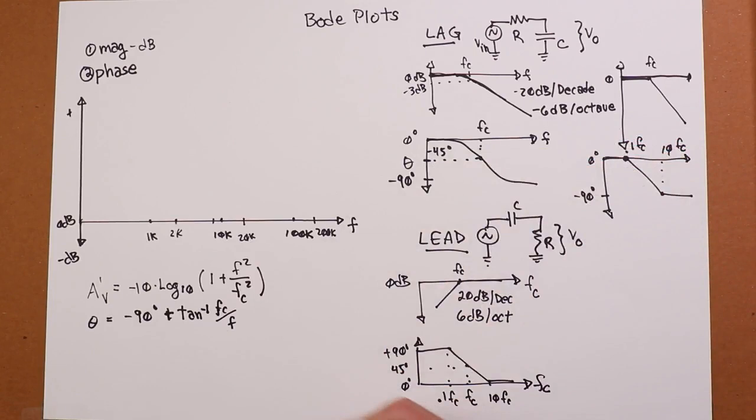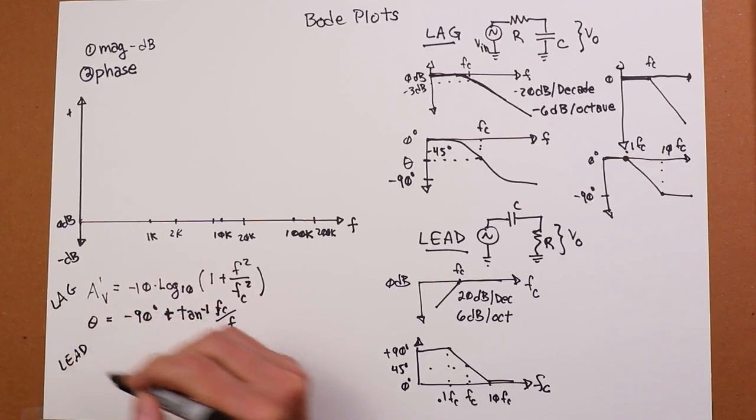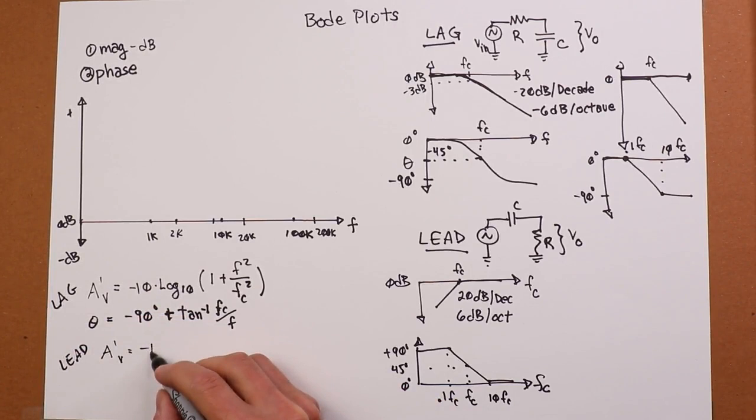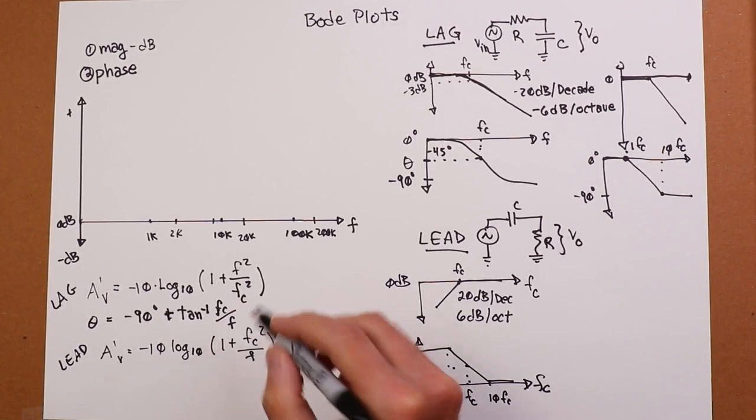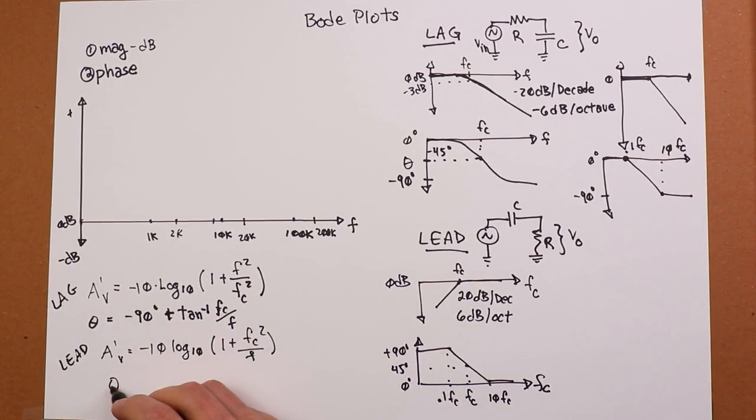And for your leads, we have very similar equations. The gain is negative 10 log base 10 times the quantity 1 plus fc squared over f. So these frequencies are just flipped. And then the phase essentially just doesn't have the minus 90 shift on it. So that's just arctan of fc over f.